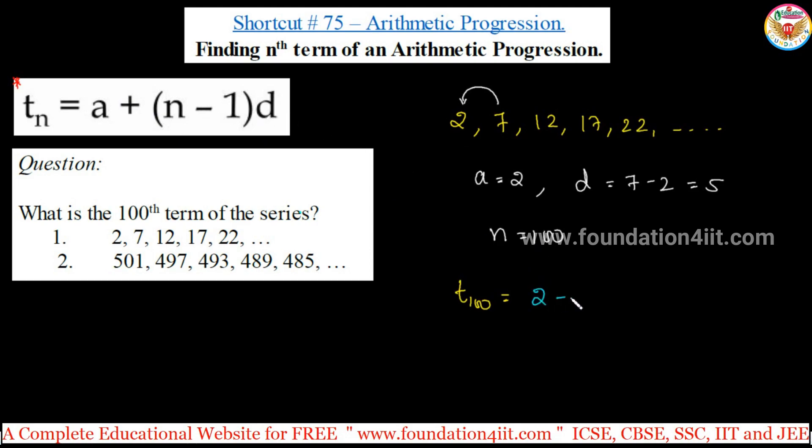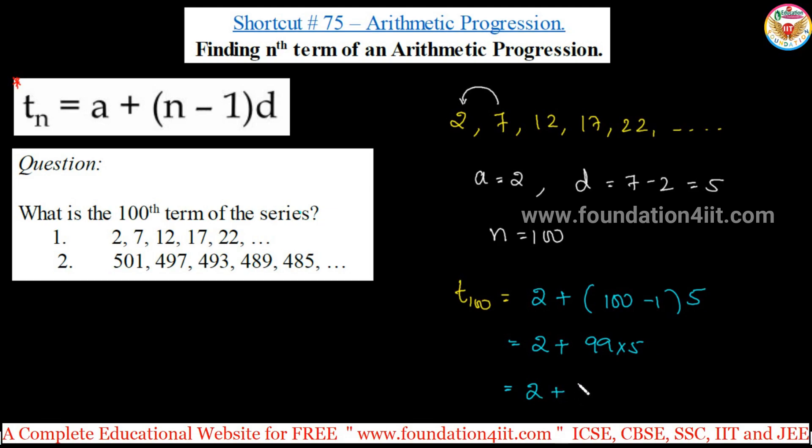a is the first number, that is 2 plus n minus 1, 100 minus 1. Difference is 5. 2 plus, first within the bracket, 99 into 5. You simplify, so 2 plus, and you can multiply this. 99 into 5 is 495. 495 plus 2 is 497.